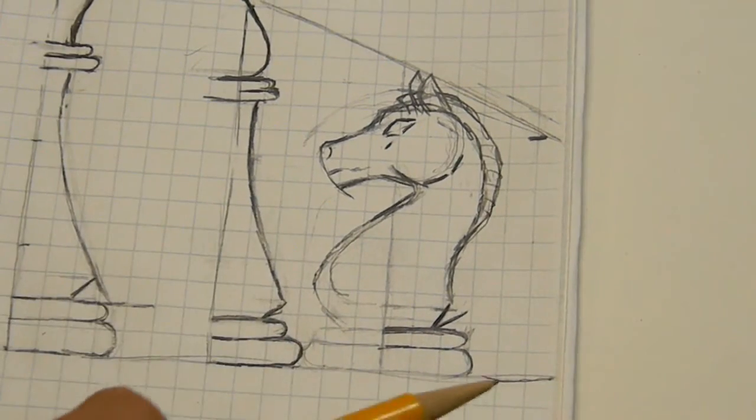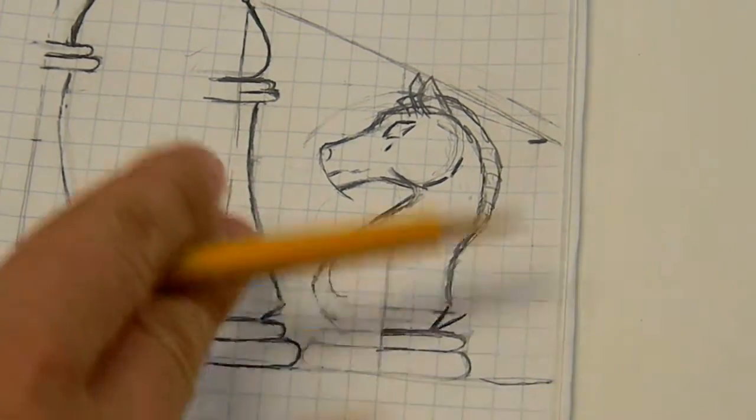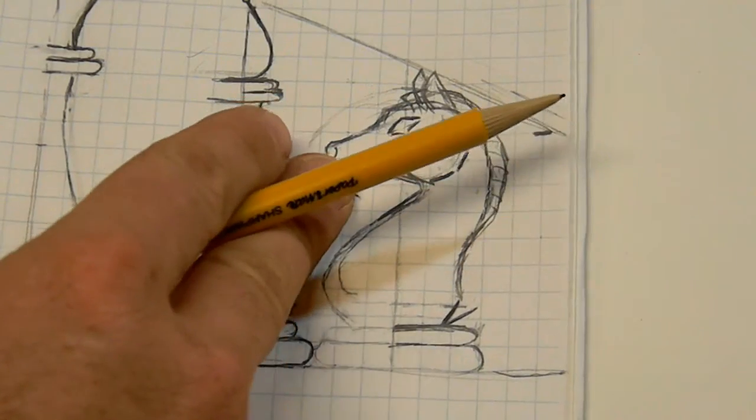We have the basic knight. Now to get the rook, we're going to need to obviously come down from the knight height.